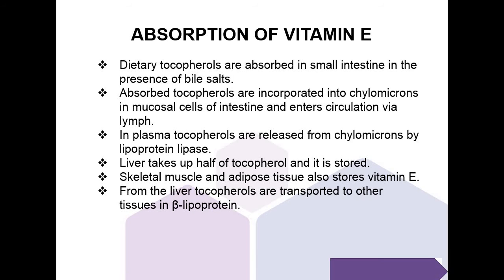Dietary tocopherols are absorbed in the small intestine in the presence of bile salts. The absorbed tocopherols are incorporated into chylomicrons in mucosal cells of the intestine and enter circulation via lymph. Plasma tocopherols are released from chylomicrons by lipoprotein lipase.